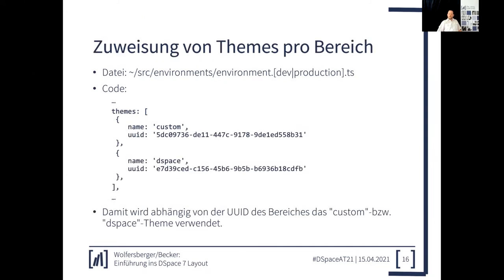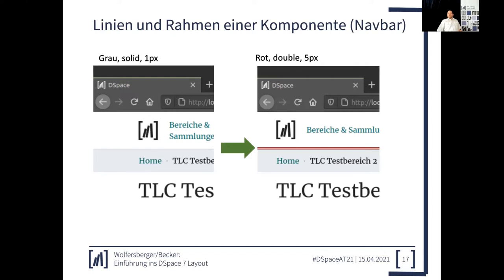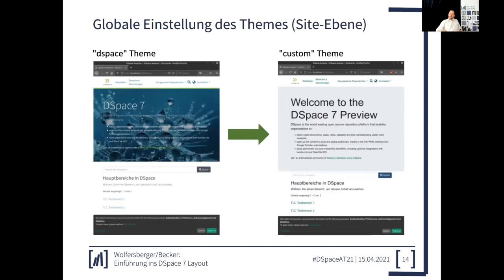Es gibt auch die Möglichkeit, das Theme auf DSpace-Substrukturen anzuwenden, indem man UUIDs benennt – in dem Fall zwei UUIDs von DSpace-Communities. Es gibt auch die Möglichkeit, in dieser Datei Regular Expressions zu verwenden. Das heißt, alles, was Sie über Regular Expressions selektieren können, können Sie mit einem Theme adressieren – bis hin zu einer einzelnen UUID von einem einzelnen Item. Mit dieser Einstellung schalten wir also das Custom-Theme ein.